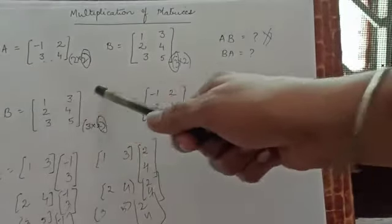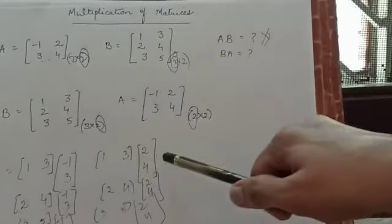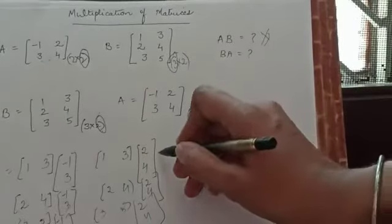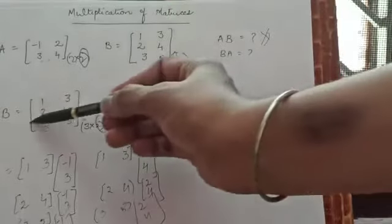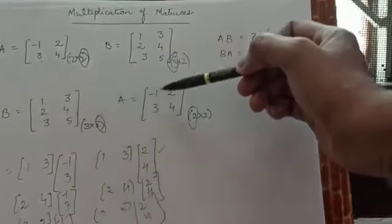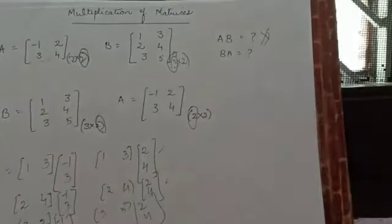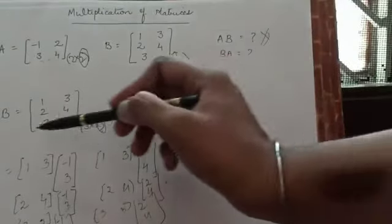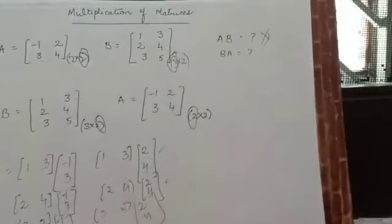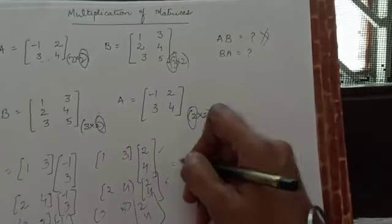The pattern is: first row with first column, then first row with second column. Then second row with first column, second row with second column. Then third row with first column, third row with second column. Now we proceed to solve each of these products.